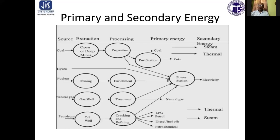Petroleum is abundantly used in today's world and is found in oil wells. It requires cracking and refining, through which many byproducts are produced: LPG, petrol, diesel, fuel oil, and petrochemical products. Some of these can go to power stations to produce electricity. LPG is mainly used for cooking in households; petrol, diesel, and fuel oil are used to run motor vehicles; and other byproducts are used in petrochemical industries.